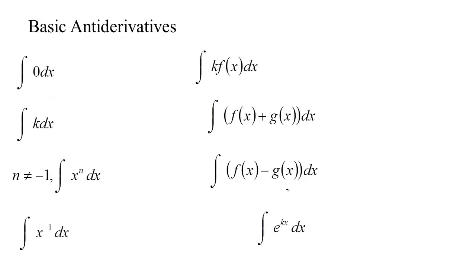Let's do some basic antiderivatives. Remember by corollary 2, if we can find any function that has that derivative, then all the others are just that function plus a constant. What kind of function has a derivative that's zero? Any constant function. So the antiderivative of 0 dx is just c. What function has a derivative that's just a constant? The derivative of kx with respect to x is k, so the antiderivative of k dx is kx plus c, and by corollary 2 all antiderivatives just vary by a constant.